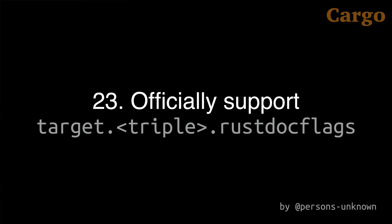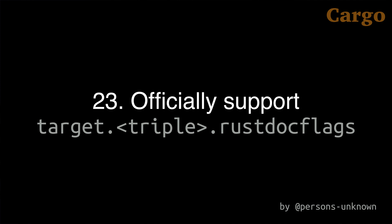Number 23: Cargo already supported a target.triple.rustdocflags setting for custom flags to pass to rustdoc for specific targets. Apparently this support was accidental and undocumented — now it is officially supported and documented. Number 24: The cargo add command also sometimes creates a feature. Now a line is output whenever a feature is created so the user can be informed about it.